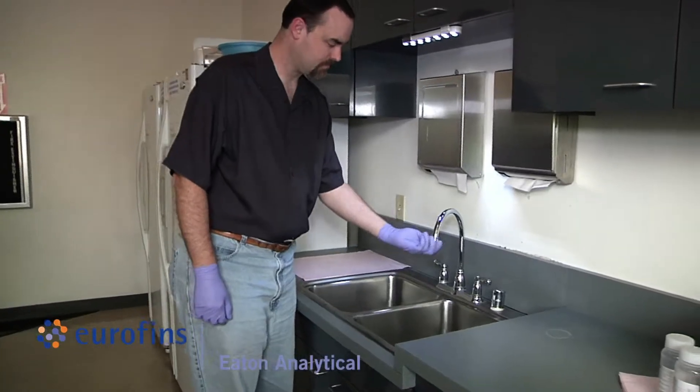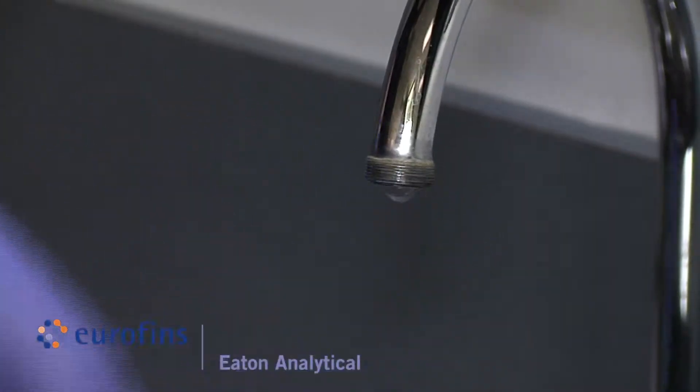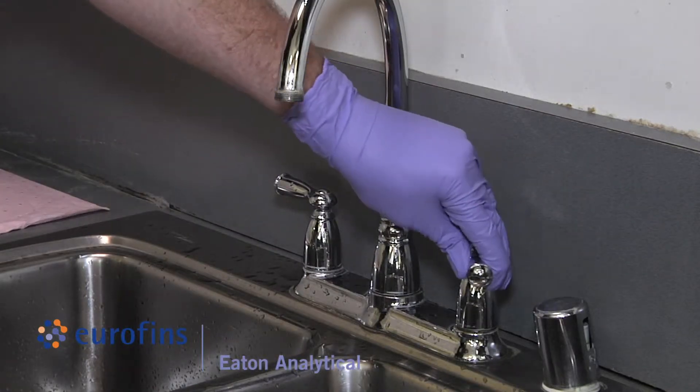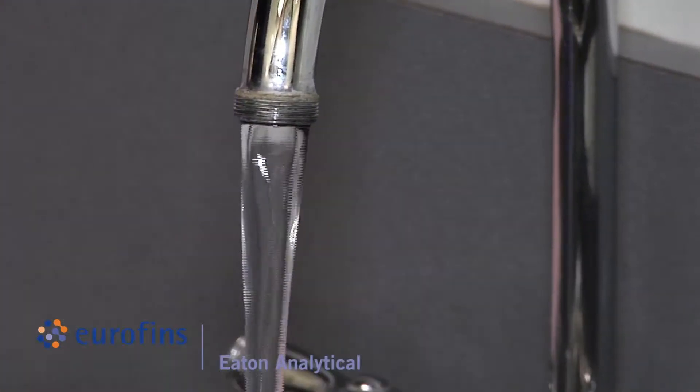Before sampling, remove the aerator and screen if sampling from a faucet or tap. Open the tap and let the water run at fast flow for approximately five minutes.